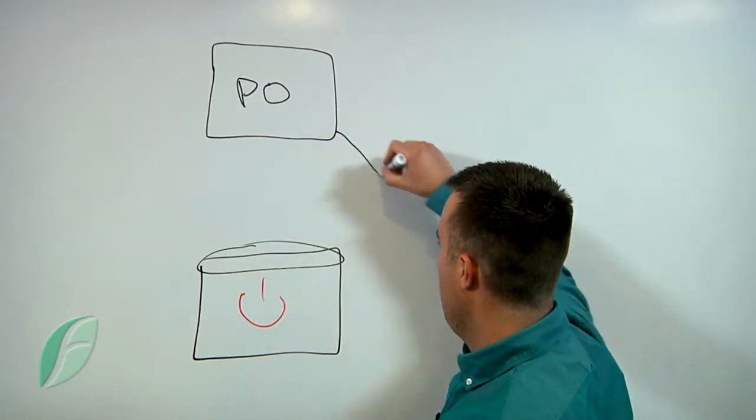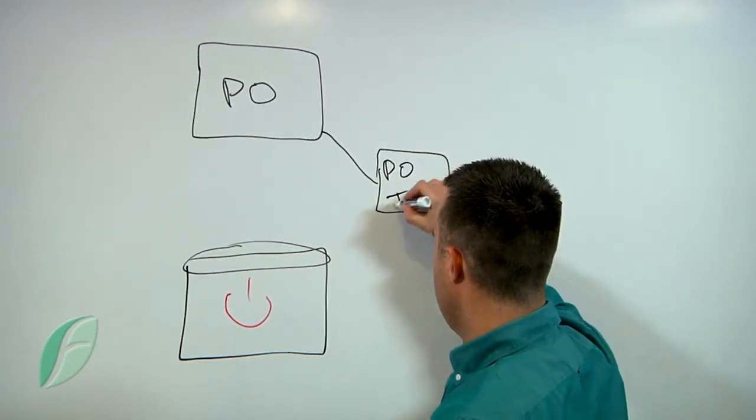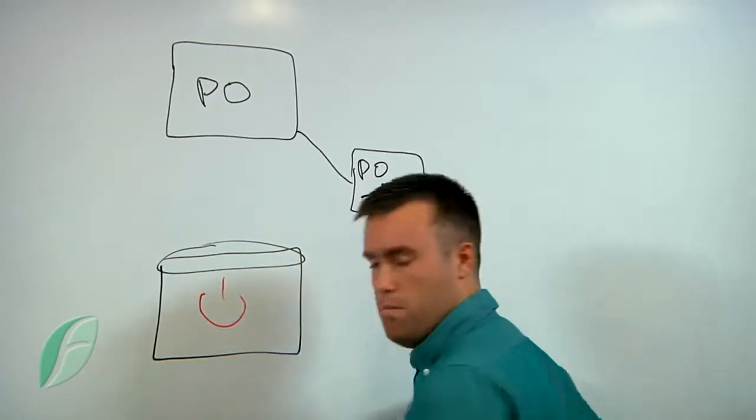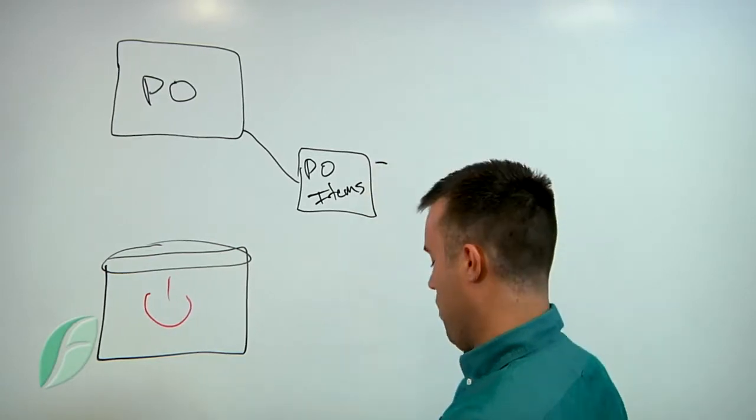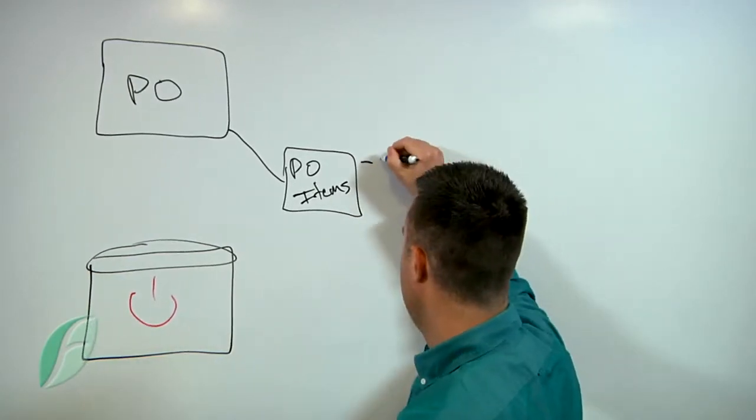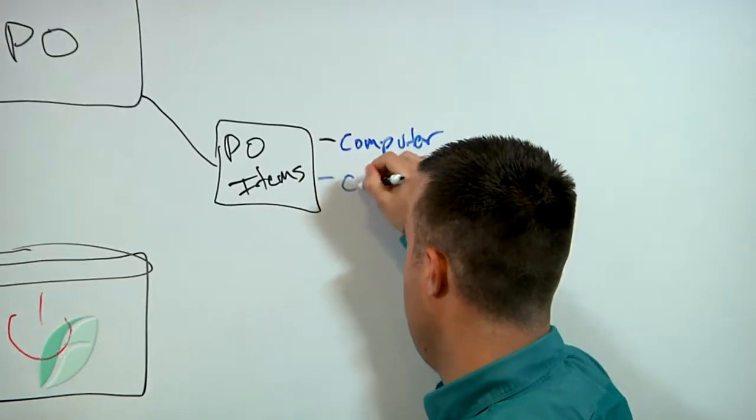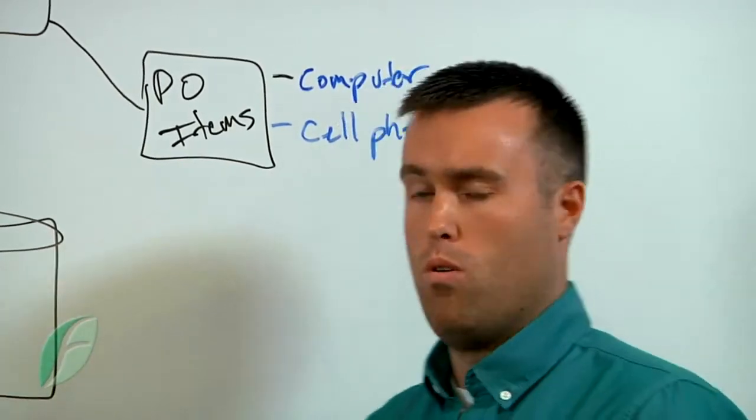From there, there are going to be purchase order line items. Those line items are the specific items that are being ordered, so that's going to track what it is, if it's a computer or cell phone, and how much that item is, and how many you're ordering.